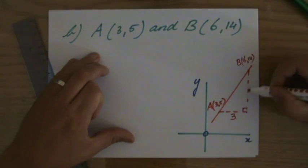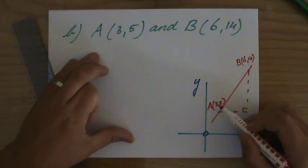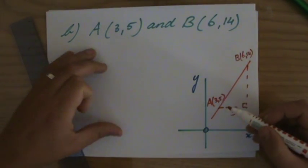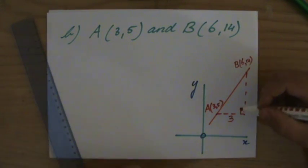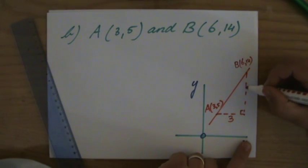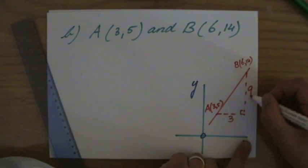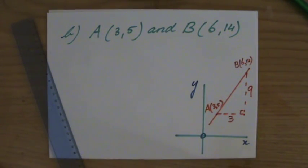And how many steps does it go up from A to B? Well, the y-coordinate of A is 5, and the y-coordinate of B is 14. So he is going, how many steps up? From 5 to 14. 9 steps up.